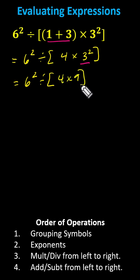Still simplifying inside the brackets, we have 4 times 9. 4 times 9 is equal to 36. If we want to, we can drop the brackets now and write this as 6 squared divided by 36.